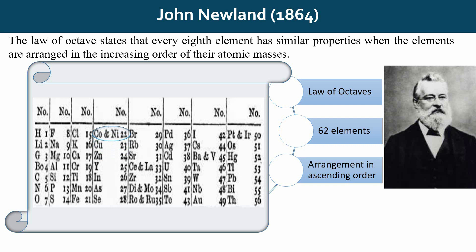Some limitations in Newlands' Law of Octaves include: first, several elements were fit into the same slot in his periodic classification — for example, Cobalt and Nickel were placed in the same slot. Second, elements with dissimilar properties were grouped together; for example, the halogens were placed together with some metals such as Cobalt, Nickel, and Palladium.